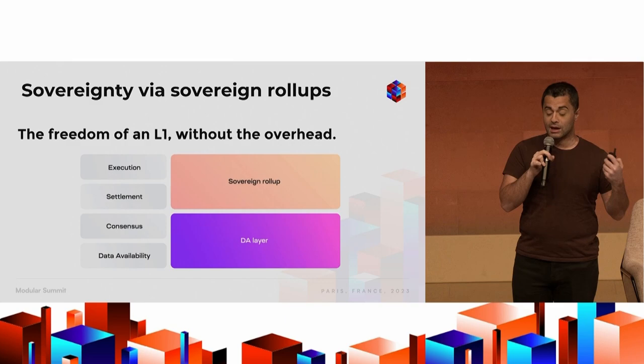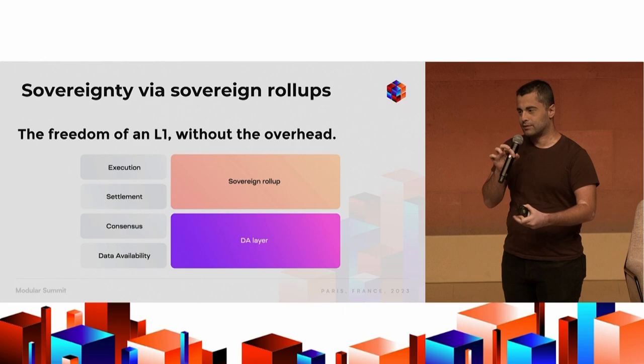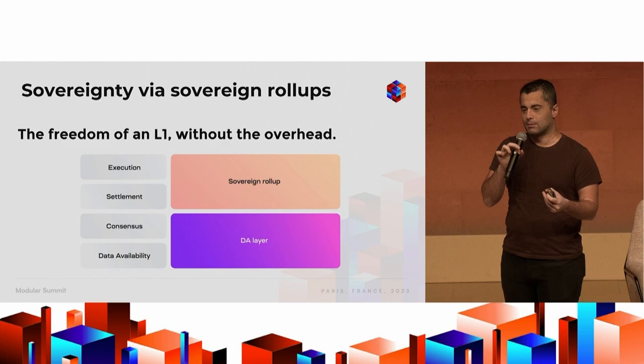Sovereign roll-ups are an interesting case that has gained traction over the past year. They effectively give the community of that roll-up the freedom to fork it — you basically get the freedom of a layer one but without the overhead, without needing to create a new consensus network or token from scratch.